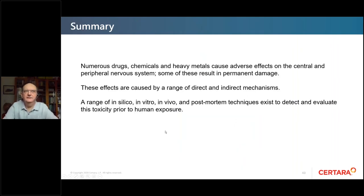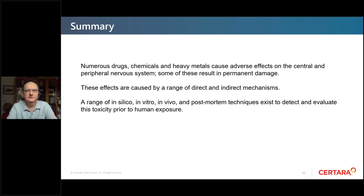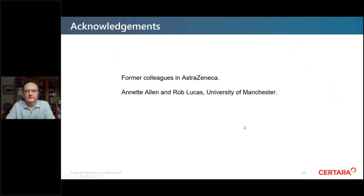In summary: numerous drugs, chemicals, and heavy metals cause adverse effects on the central and peripheral nervous system, some resulting in permanent damage. These effects are caused by a range of direct and indirect mechanisms, and there is a range of in silico, in vitro, in vivo, and post-mortem histological techniques to detect and evaluate this toxicity prior to human exposure. Thanks to former colleagues at AstraZeneca, Annette Allen for the ERG measurements, and Rob Lucas at the University of Manchester.